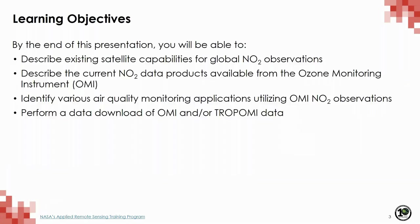By the end of this presentation, we're going to go over existing satellite capabilities for global NO2 observations, describe current NO2 data products available from OMI — the Ozone Monitoring Instrument — identify various air quality monitoring applications utilizing OMI NO2 observations, and I'm going to show you how to perform a data download of OMI and/or TropoMe data.